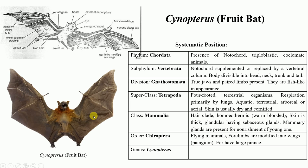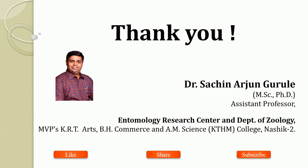With this we have completed our practical. I hope all of you understand the general characteristic features of Mammalia and we have learned the three animals — Rattus rattus commonly known as rat, Sorex commonly known as shrew, and Cynopterus commonly known as bat — for their classification. Thank you very much.